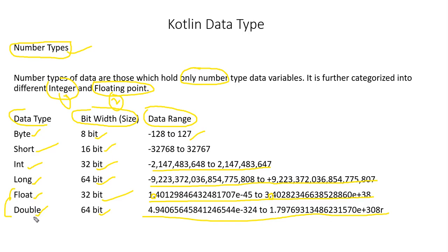So to summarize: byte is 8 bits, short is 16 bits, int is 32 bits, long is 64 bits, float is 32 bits again, and double is 64 bits. The higher the bit width, the more memory it consumes.